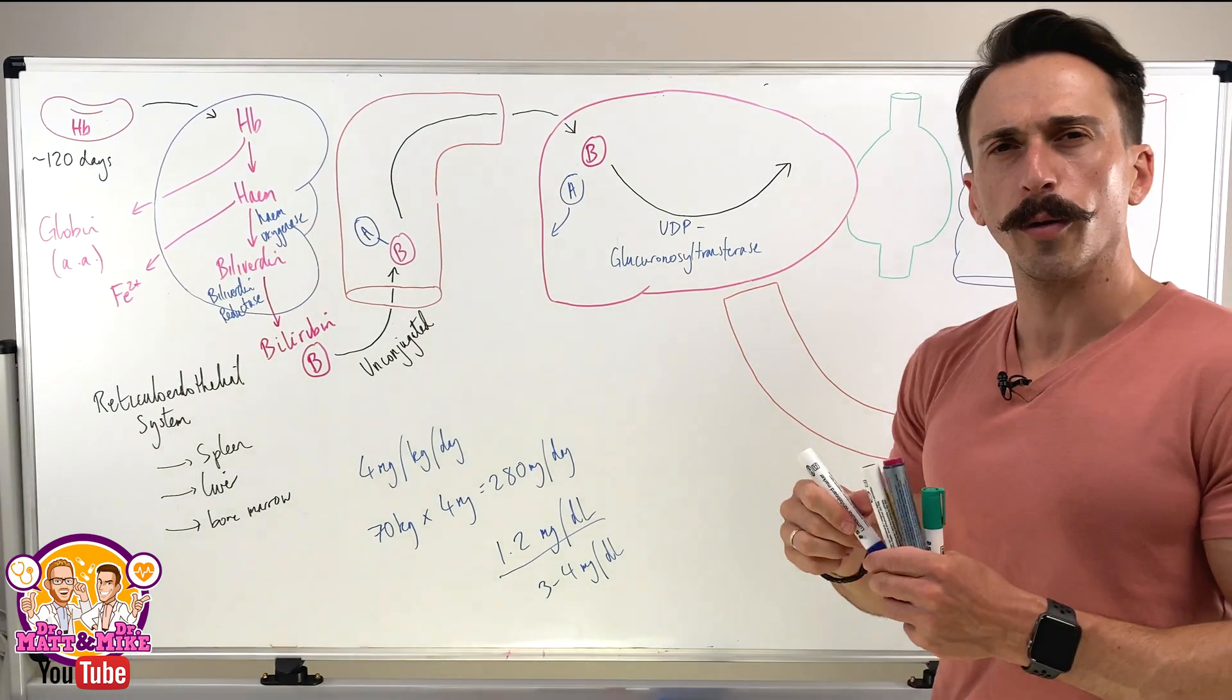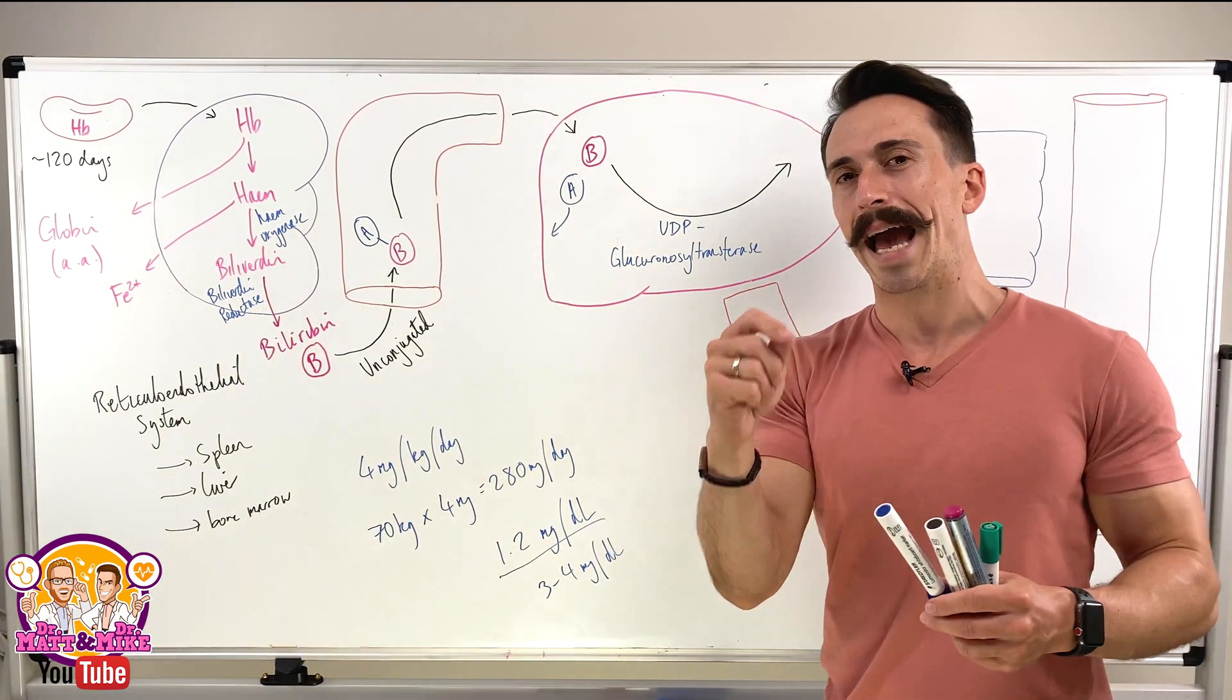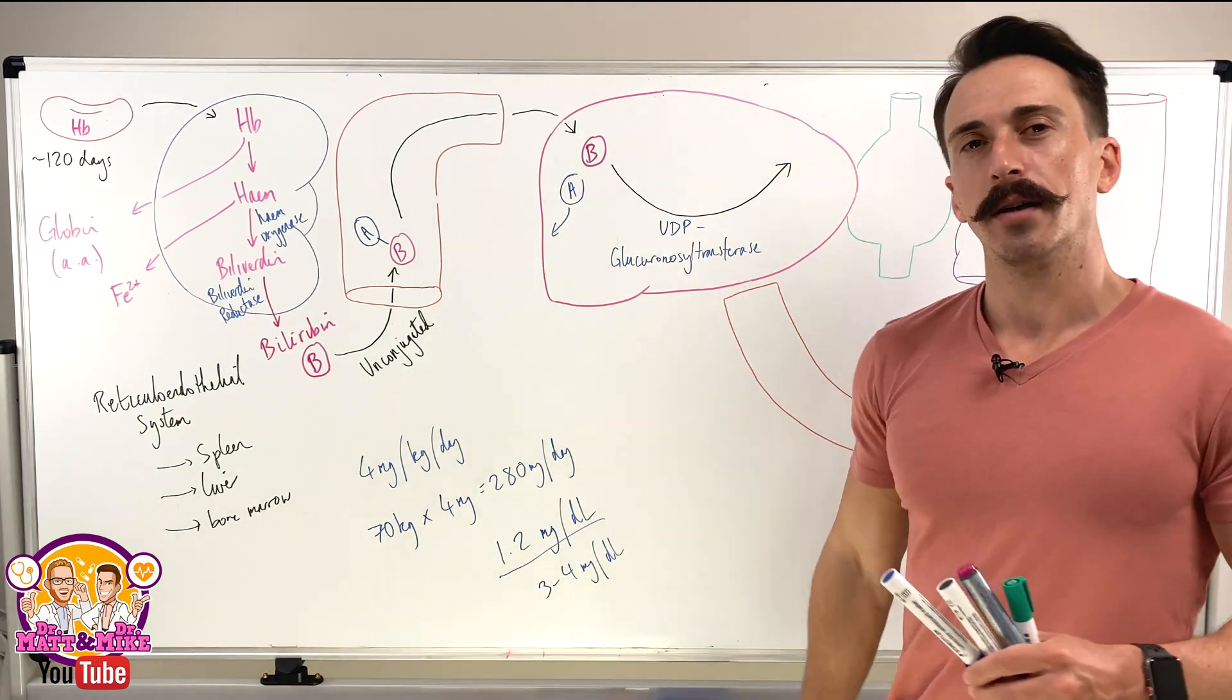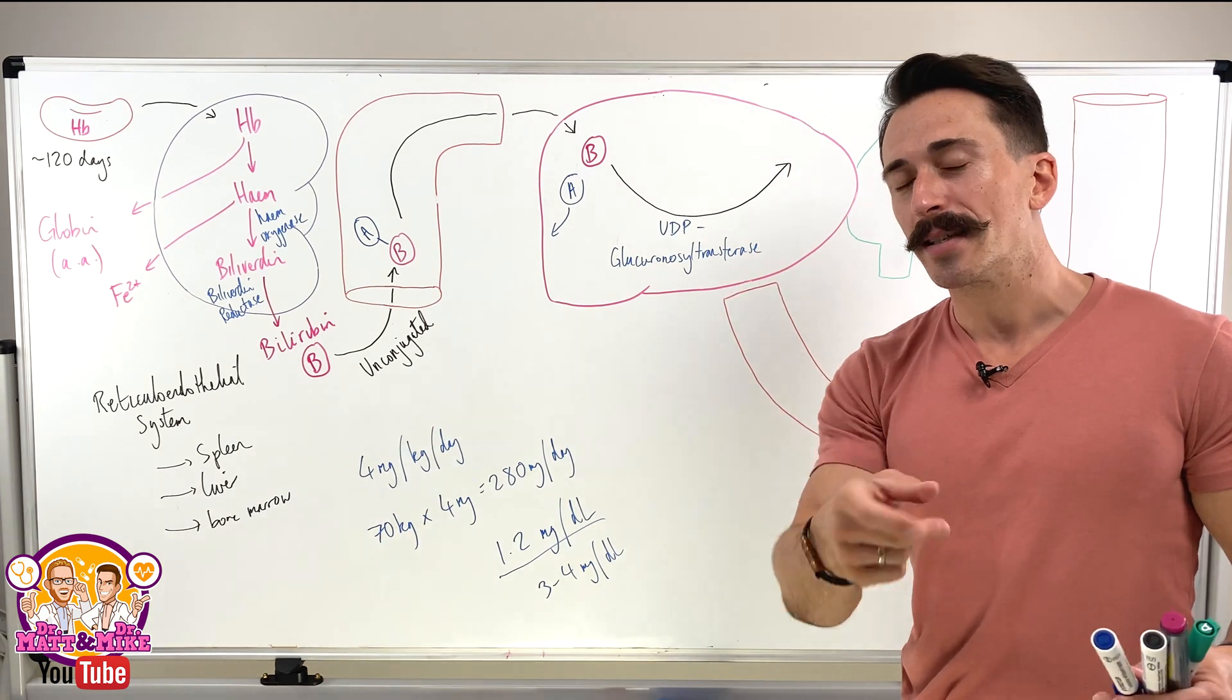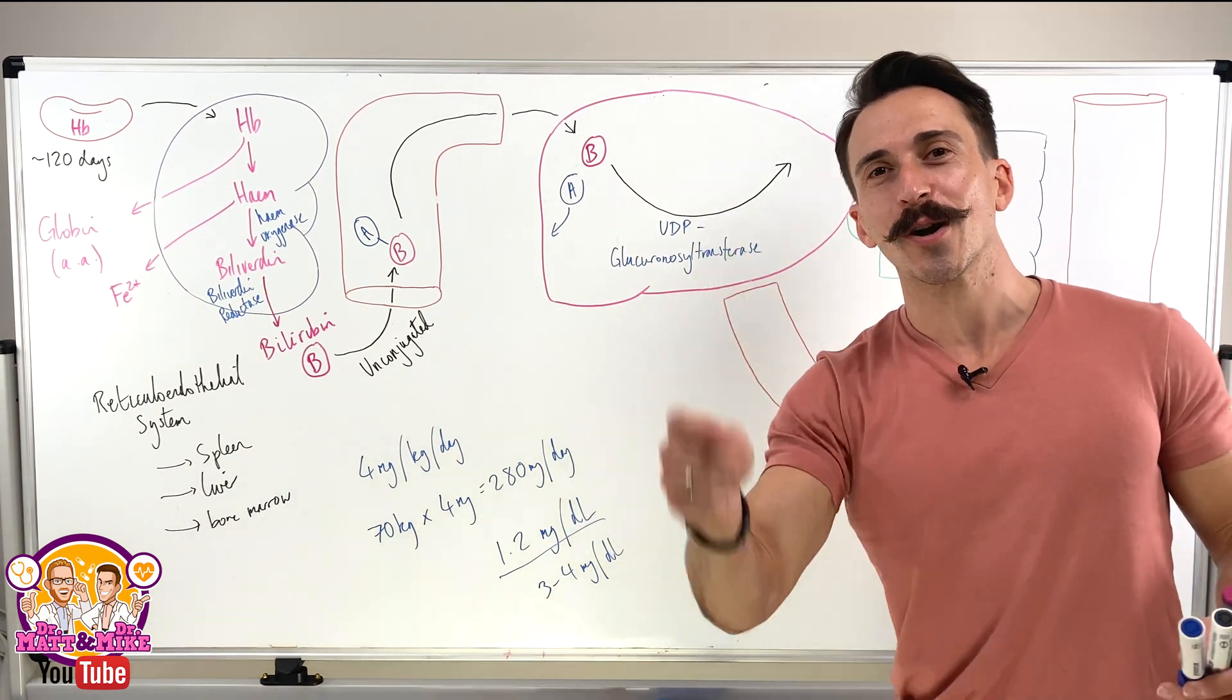Horrible name. What does it do? It basically takes a glucuronic acid and clicks it onto the bilirubin. Why? Because glucuronic acid makes bilirubin water soluble now.